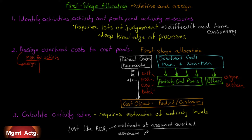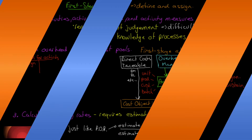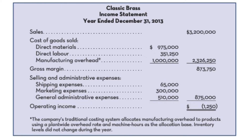This has all been rather abstract. The book has a really great company example and we're going to go through it now. We're going to be using a company called Classic Brass to walk us through the first-stage and second-stage allocation in activity-based costing. There's no way to do it abstractly — we really have to use a concrete example, and the book is a good one. If you have the book, follow along. If you don't, I've replicated just the exhibits that are needed.